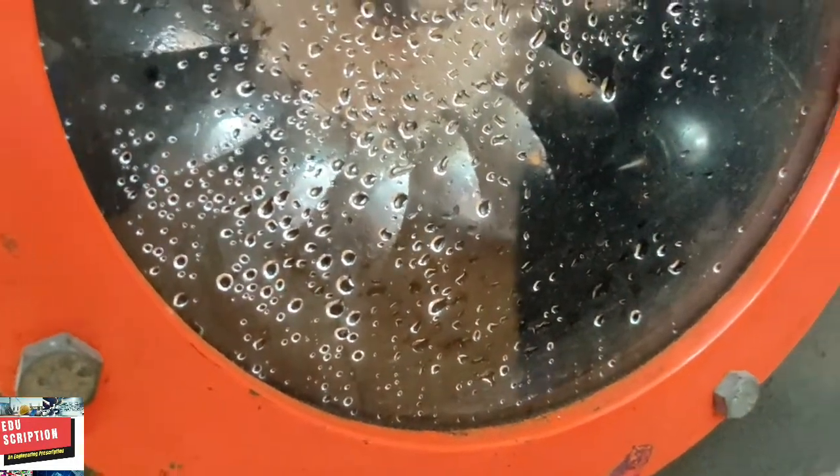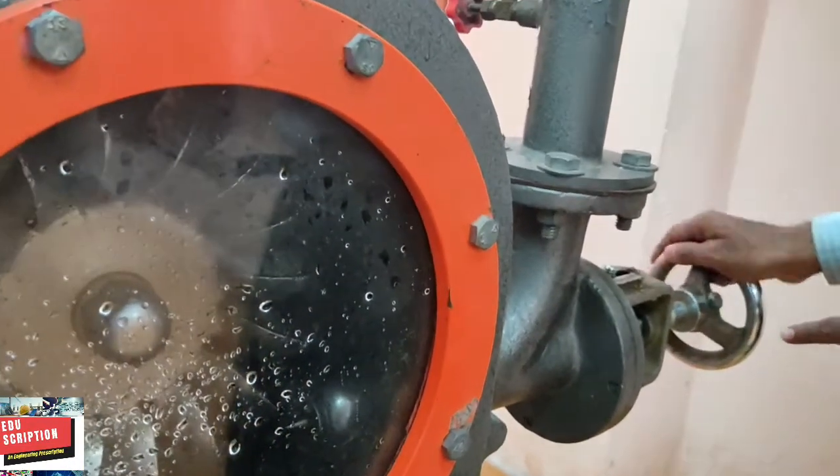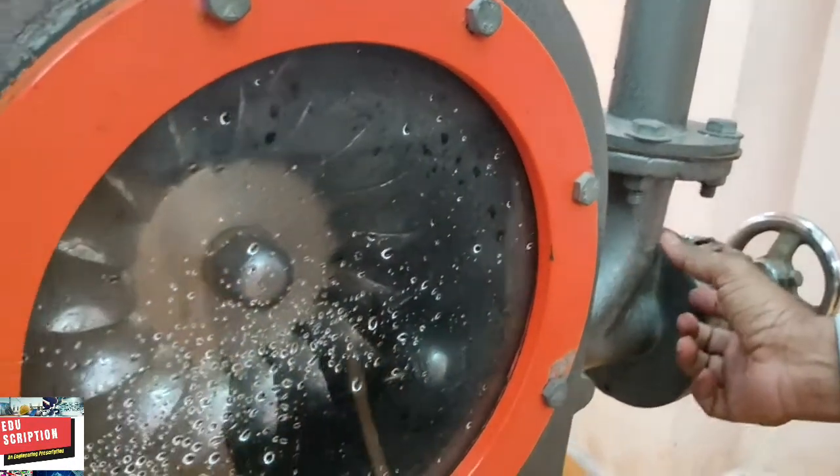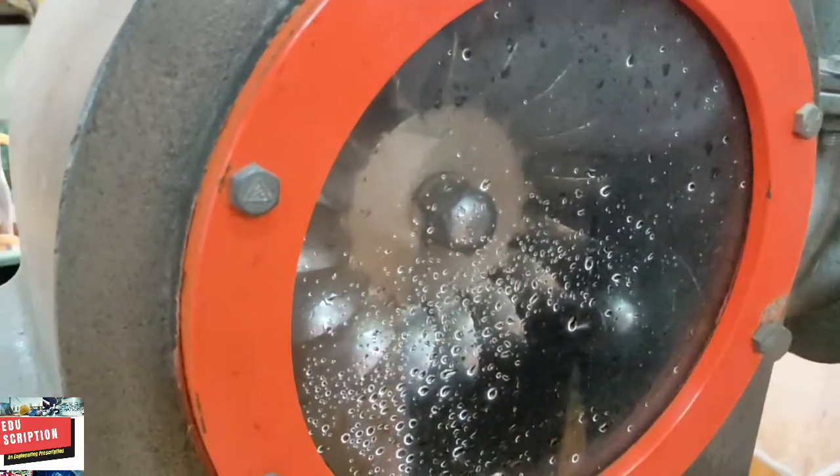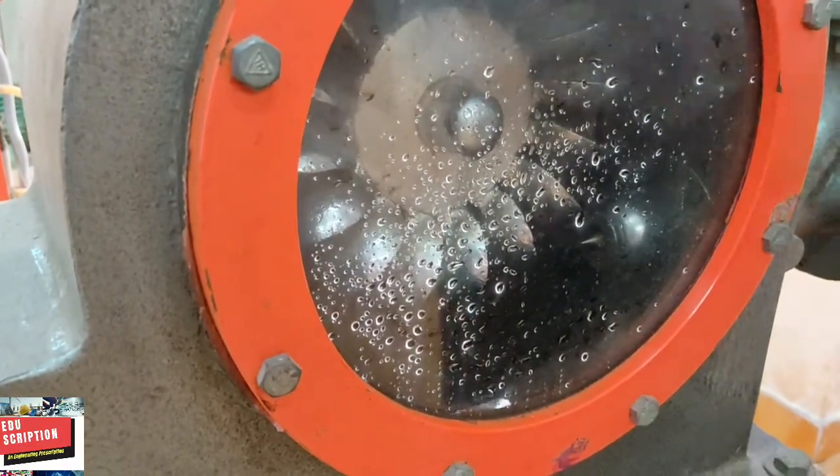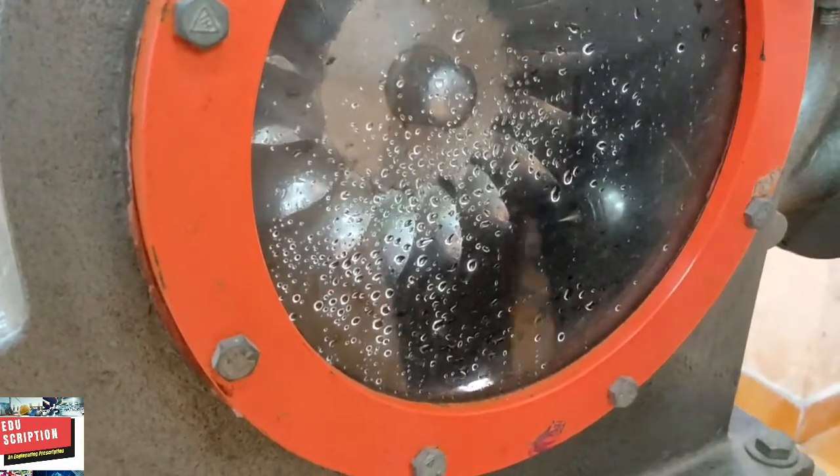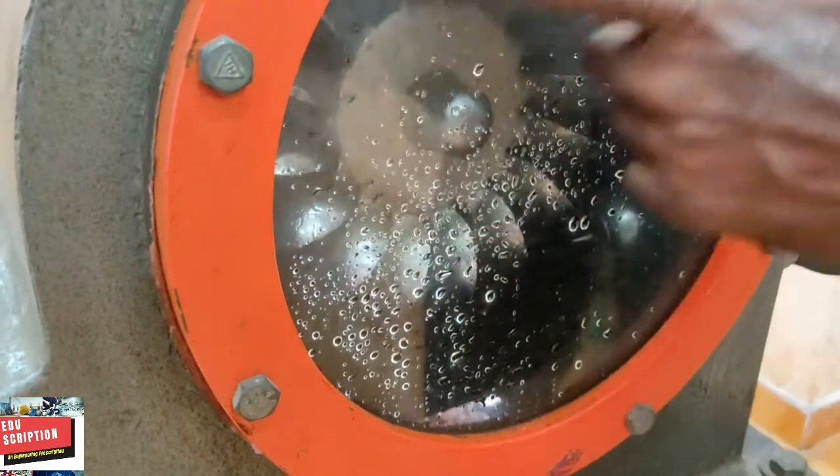Now you just mark here: the upper pointed part is the spear which is operated by this handle. When we open this spear, automatically the water is converted into a water jet and strikes upon the bucket. That's why it is pressurized to rotate the shaft.